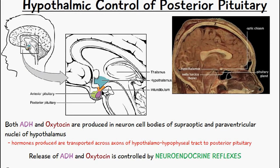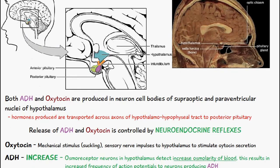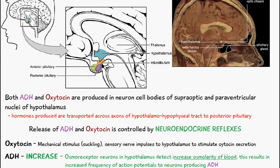of the supraoptic and paraventricular nuclei of the hypothalamus. The hormones produced are transported across axons of the hypothalamal hypophysial tract to the posterior pituitary gland. We mentioned this tract in the last video when we were talking about the anterior pituitary. The release of ADH and oxytocin is controlled by neuroendocrine reflexes.